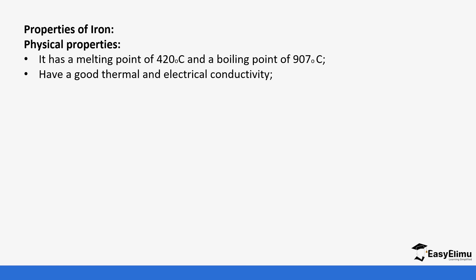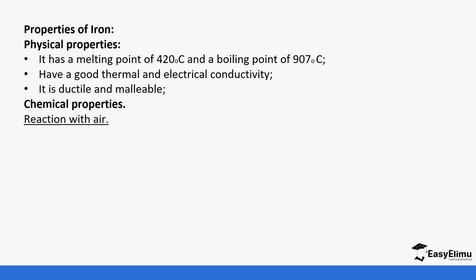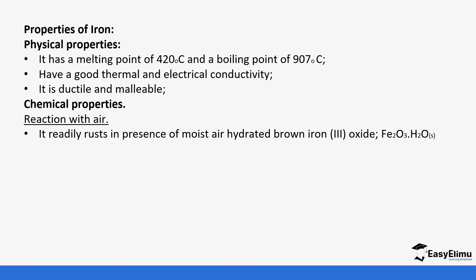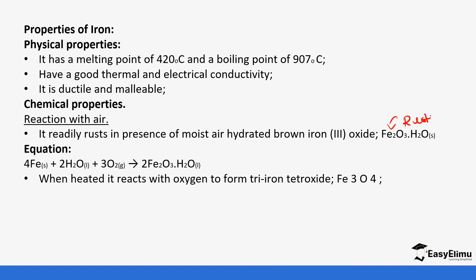Some properties of iron: iron has a melting point of around 1420 degrees Celsius and a boiling point of 2907 degrees Celsius. It is a good conductor of heat and electricity, and is ductile and malleable. In terms of chemical properties, iron reacts with air to form hydrated iron(III) oxide, which is rust. When heated in oxygen, it forms tri-iron tetra oxide (Fe₃O₄), which is magnetite — one of the ores.